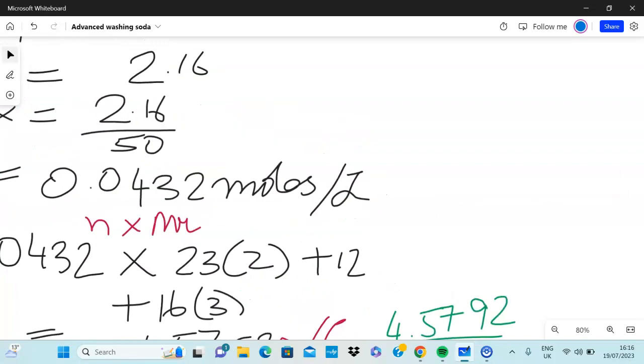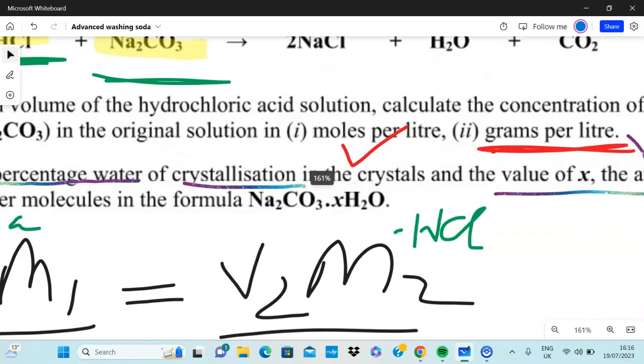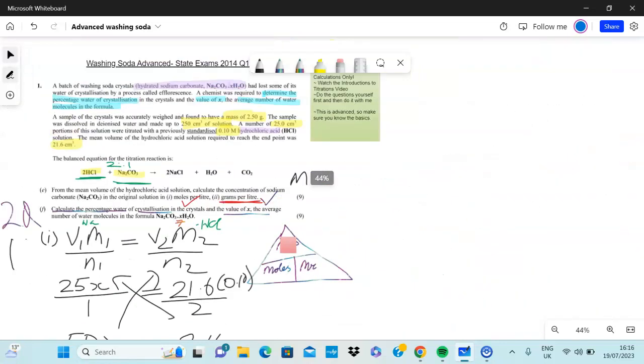So in reality this crystal that we used - the crystal that we used is Na2CO3·7H2O. And that's how you do this question.